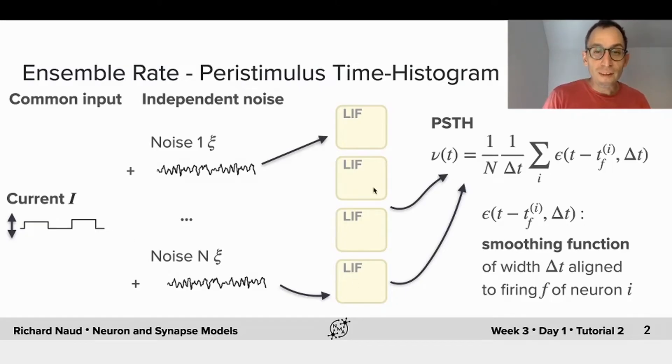We will consider that the different neurons will receive different background noise. This noise is there to take into account the fact that there's a different background of synapses that these neurons would typically receive.